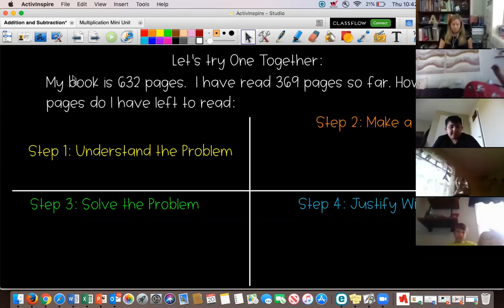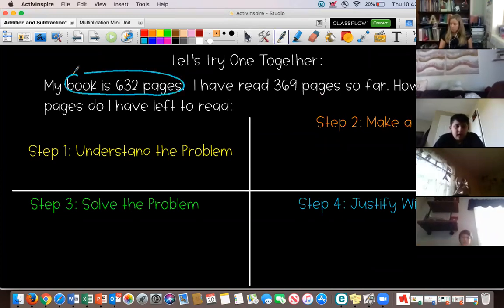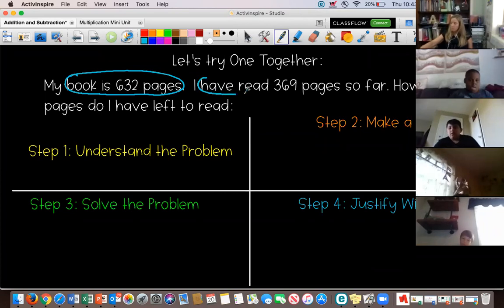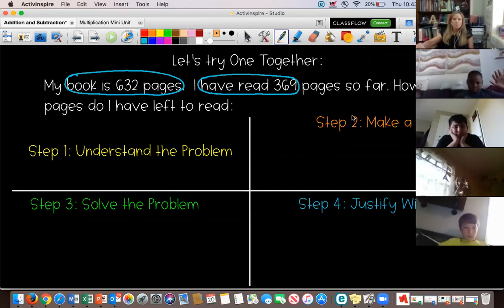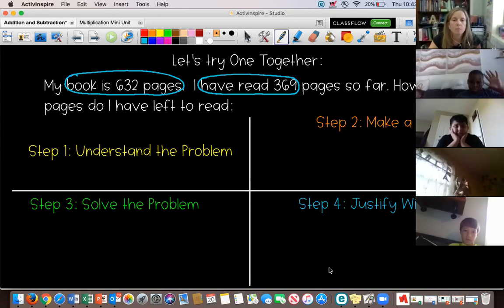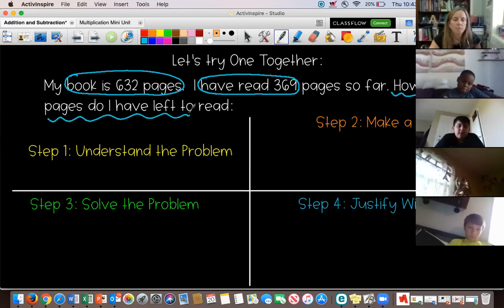So, I'm going to go. Corbin said the numbers, right? So, the book is 632 pages is the first important thing, right? I know the total number of pages. And then it says I have read 369, right? So, there's two pieces of information that are important. What is the question asking us to solve? CJ, what's it asking us to solve? What's the question it's asking us? How much do you have left? Yeah. Thank you. It's asking me how many pages do I have left, right? So, now I've done that part. I've done the understanding. Now, I'm going to make a plan.